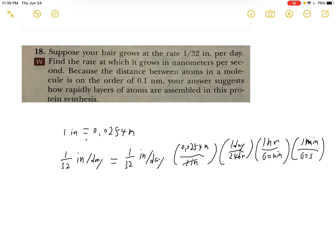And cancel all the inches and day and hours and minutes out. We will have meters per second. So after we multiply all this, we will have 9.186 times 10 to the negative 9th power meters per second.